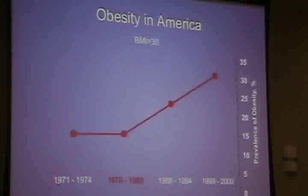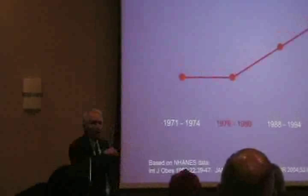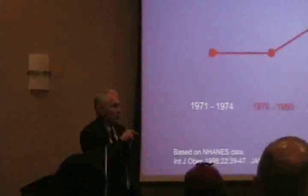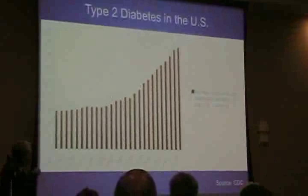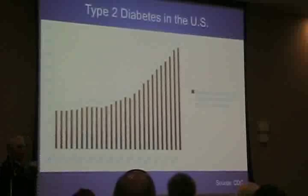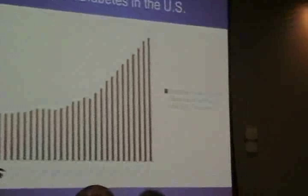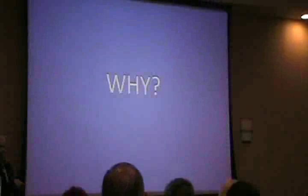Looking at this data differently: the obesity curve is pretty flat up through the early-to-mid 1970s, and then it takes off. So that epidemic started somewhere around that time — and if you know when something started, you should be able to figure out what caused it. The diabetes curve in the US shows the same kind of rise, but starting around 1990–92 — about 12 years after the obesity curve took off. That fits with the earlier slide showing insulin resistance takes 12 years to manifest as type 2 diabetes.